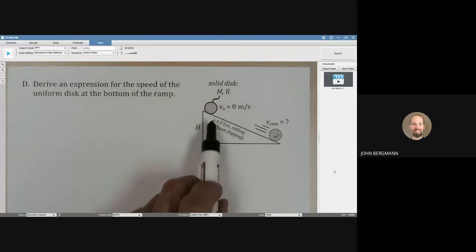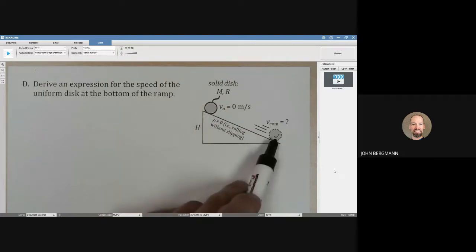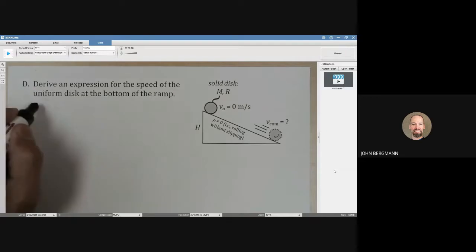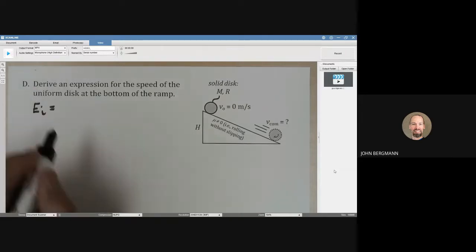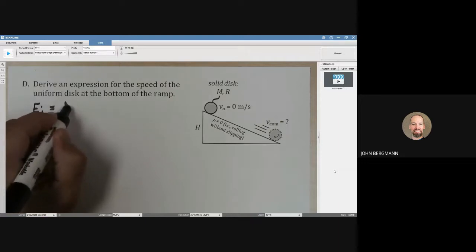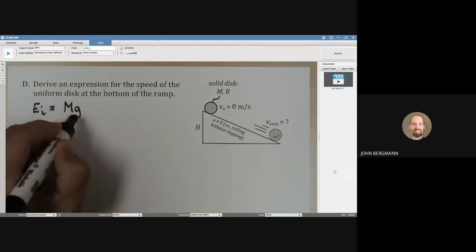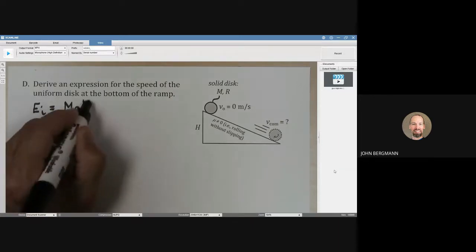So we have a disk here at the top and it's rolling down and we want to know what its speed is at the end. Let's conserve mechanical energy. The mechanical energy at the top is the mass of this thing multiplied by g multiplied by how high it is, which is h.